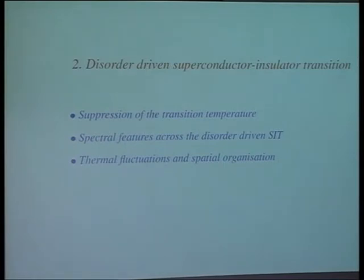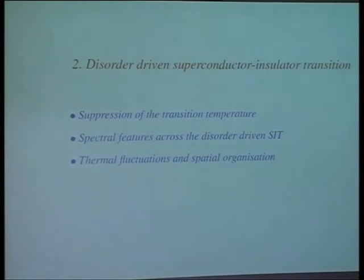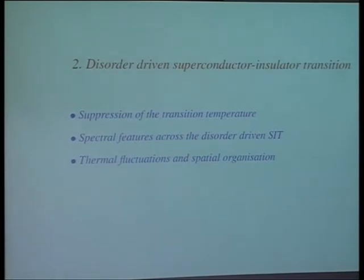So, three parts to the disorder story as well: what happens to the transition temperature, what happens to the spectral features across the disorder-driven SI transition — that is, with progressively higher degrees of disorder, what happens to your density of states, optics, and resistivity — and spatial maps, because people have started doing spatially-resolved tunneling measurements. Pratap does it at TIFR, and various people elsewhere in the world. We want to look at what temperature does to spatial maps and their frequency dependence.